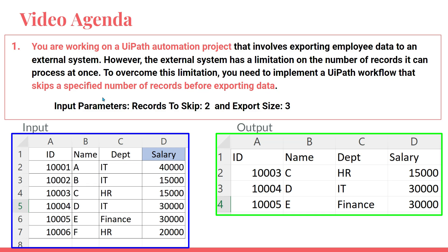To overcome this limitation, you need to implement a UiPath workflow that skips a specified number of records before exporting the data. The input data is sent to the external system with the condition: skip two records first, then export size is three. That means your output should only send rows C, D, E — skipping A and B. Now let's see how to write a LINQ query to achieve this in UiPath Studio.